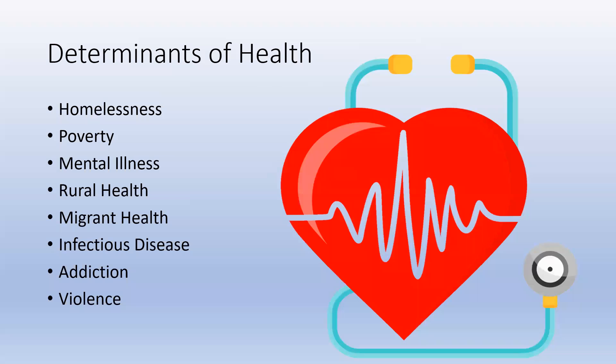The interrelationships of the aforementioned determinants — simply put, poor health outcomes are often made worse by the interaction between individuals and their social and physical environment. Therefore, where you live can be a significant indicator of how well you live, as well as how long you live.